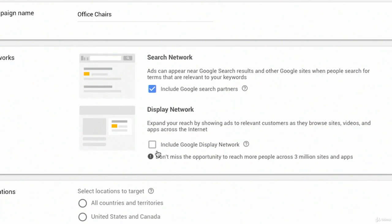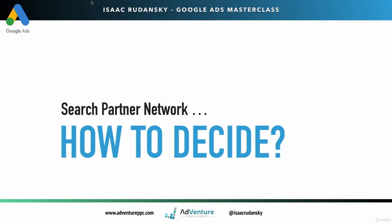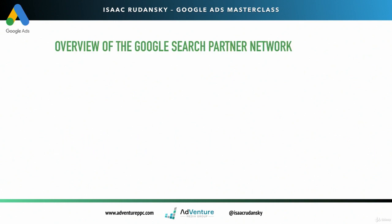I have the option of deselecting include Google search partners. Now, what in the world is this option of Google search partners? Well, let's jump into some slides and we're going to go through that right now. So search partner network, how to decide. Welcome to the first slide. So let's do a quick overview of the search partner network.